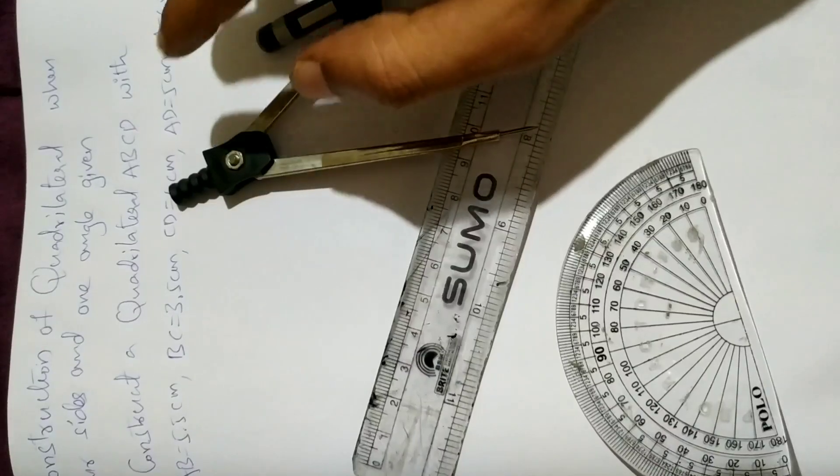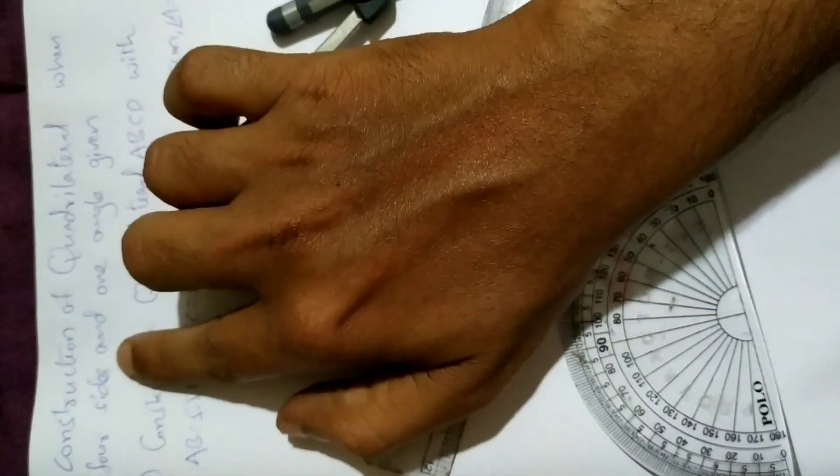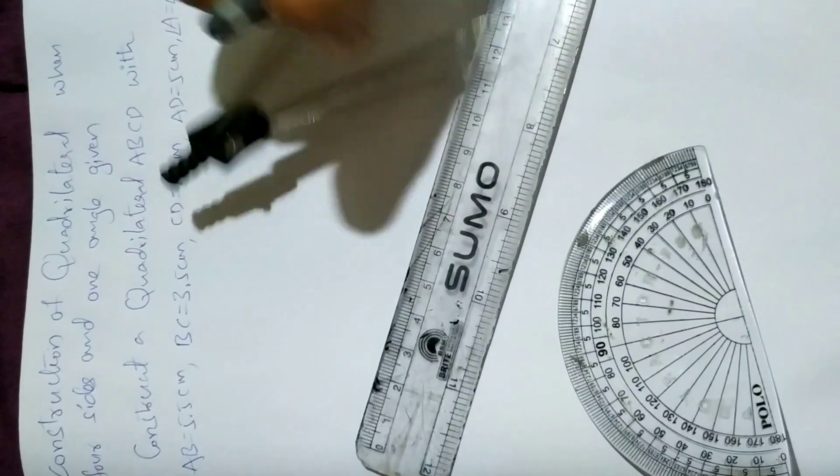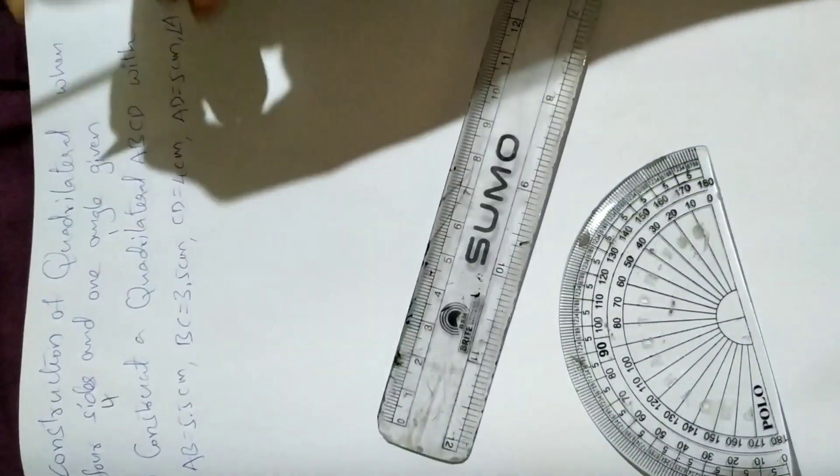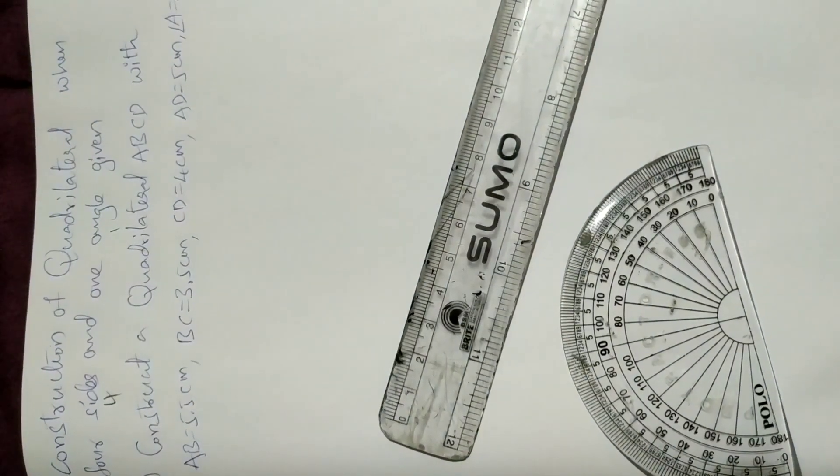Now we are going to learn construction of quadrilateral when four sides are given. So here we will take four sides and one angle. This is the first exercise problem, let us see how to construct it.